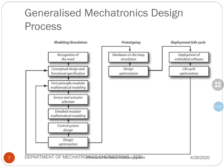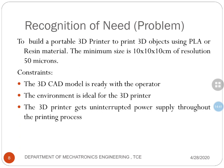The client problem is: build a portable 3D printer to print 3D objects using PLA or resin material. The minimum print size is 10×10×10 cm with a resolution of 50 microns. Constraints include: the 3D CAD model is ready with the operator, the environment is ideal for a 3D printer, and the printer receives uninterrupted power supply throughout printing. We will continue from the organization of the need step in the next video.